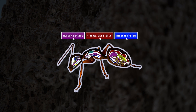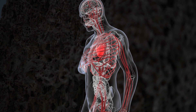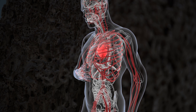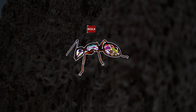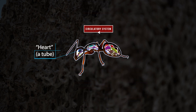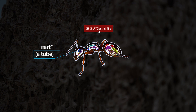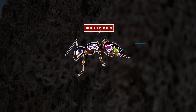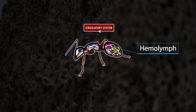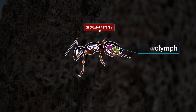Ants do have hearts, but their hearts don't look or function like human hearts. It's more of a tube running from the head to the abdomen. The blood of an ant is not red but yellowish or greenish — this fluid is called hemolymph. It acts like a highway to access cells, transporting hormones, waste materials, and nutrients.